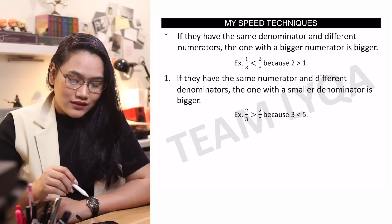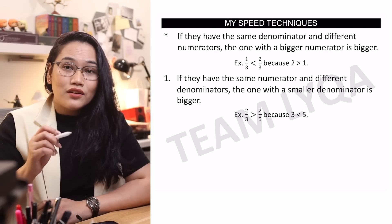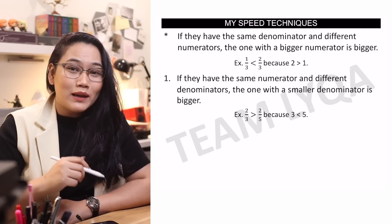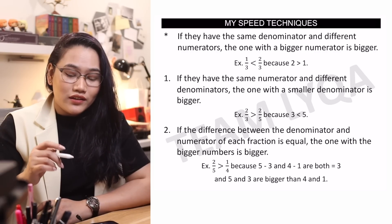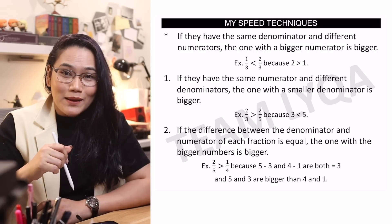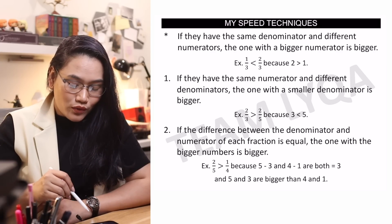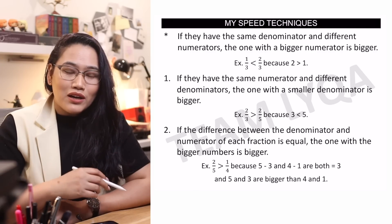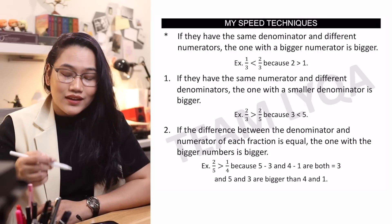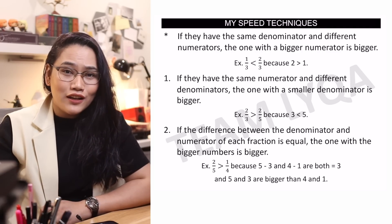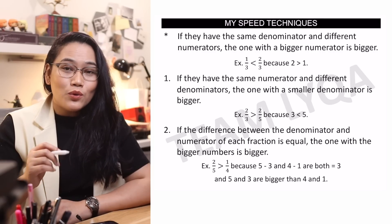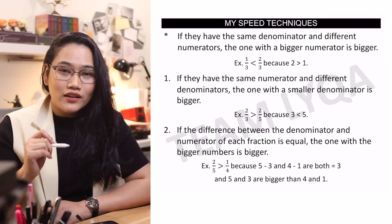Sa 2 over 3 at 2 over 5, mas malaki ang 2 over 3 because 3 is smaller than 5. Ganon — for any fraction pairs na pareho ang numerator, magkaiba ang denominator. Here's another tip: if the difference between the denominator and numerator of each fraction is equal — ibig sabihin, pag binawas ko yung number na nasa itaas sa number na nasa ilalim sa parehong fraction, pareho ang sagot — kaganito: 2 over 5 at 1 over 4. Ang 5 minus 2 ay 3, ang 4 minus 1 ay 3. When they are equal, the one with the bigger numbers is bigger. Yung fraction na mas malalaki ang numbers na involved, siya ang mas malaki. So sa 2 over 5 at 1 over 4, dahil mas malalaki ang numbers na 2 at 5 sa 1 at 4, ang 2 over 5 ang bigger fraction.